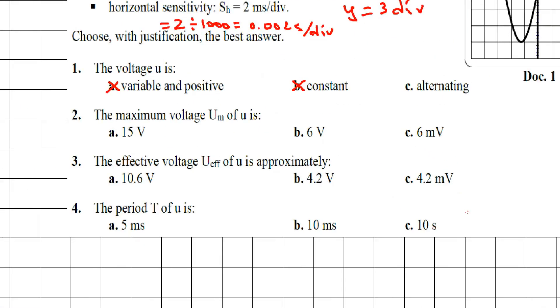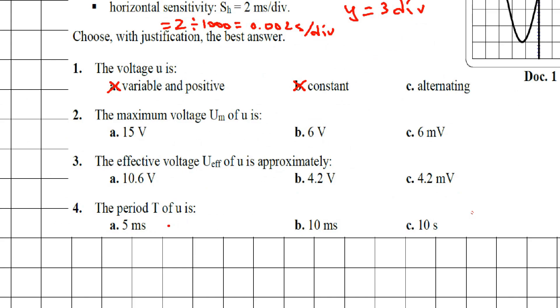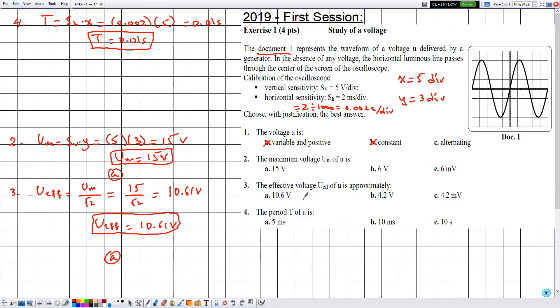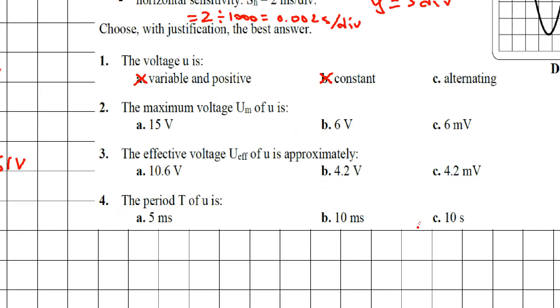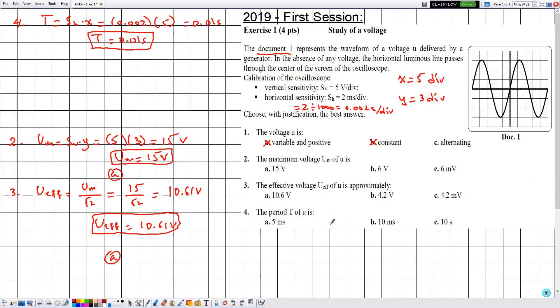Now referring to these answers, a is 5 milliseconds, b is 10 milliseconds, and c is 10 seconds. The period is not equal to any of these, but notice that a and b are in milliseconds. So let's try converting the period to milliseconds.